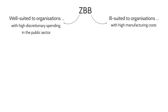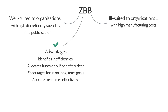Zero-based budgeting is useful for companies because it identifies inefficiencies. If you have to justify why you need a certain amount of resource, you have to make sure you definitely need it. There's no turning around and saying we've always spent £600 on this particular expense, so let's just keep doing it. You'll need to ask why you need to spend £600 on it, and in a zero-based budgeting system you have to justify it because funds are only given if there is a clear benefit.